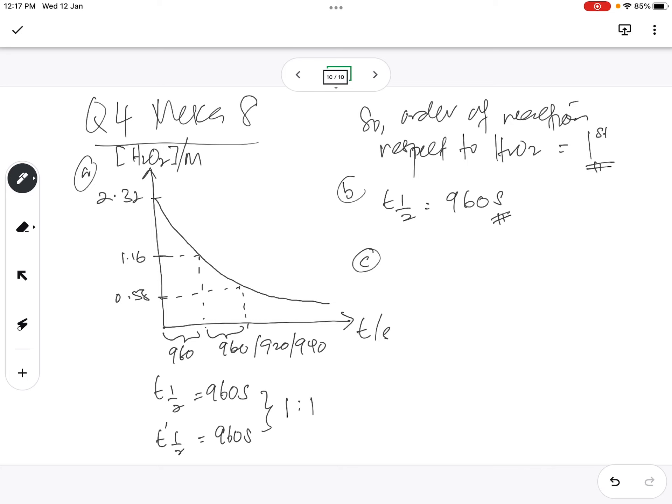We want to calculate the rate constant. This is much easier, because first order, half-life is ln 2 divided by K. K equals to ln 2 divided by half-life. ln 2 is 0.693, half-life is 960. So, therefore, we can find the ln 2 divided by 960. I get 7.220 times 10 to power negative 4 per second.